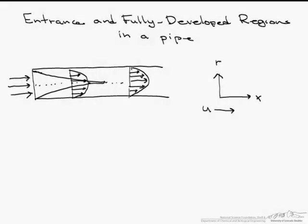This screencast is about the difference between the entrance region and the fully developed region in a pipe. So if you look at this picture right here of a pipe, if you notice we have a constant velocity going in,